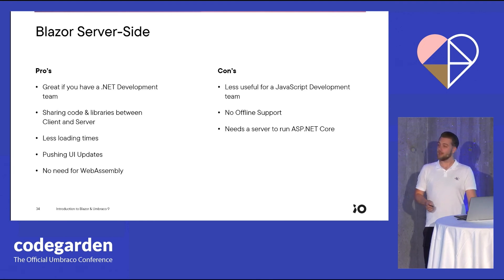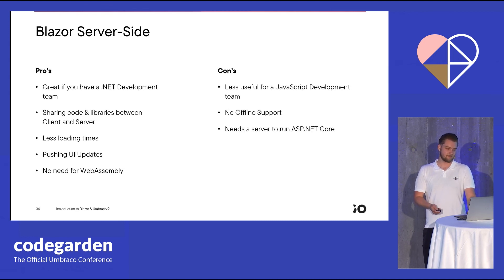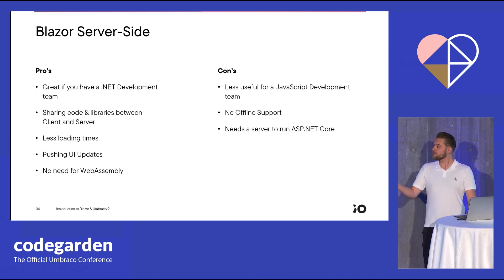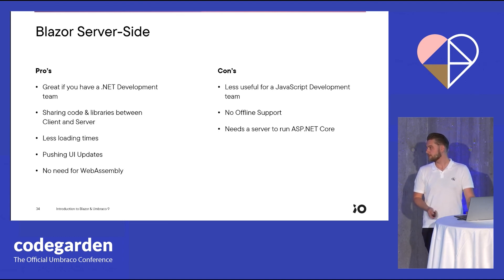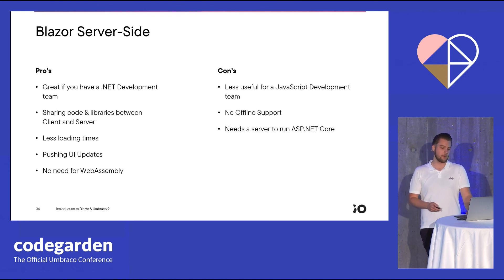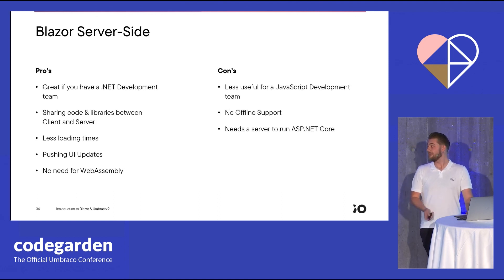Starting off with Blazor Server-Side pros: it's great if you already have a .NET development team, but less useful if you have a team of JavaScript developers who would have a more difficult time transitioning to Blazor. We're able to share code and libraries between both client and server. Another huge pro compared to the other version would be less loading times, because Blazor Server-Side keeps all its logic on the server, so fewer files need to be transferred. We're able to push UI updates to our clients, and there's no need to run WebAssembly. But the cons would be no support for offline usage when using Blazor Server-Side, and you need an active server running ASP.NET Core to have our application function.